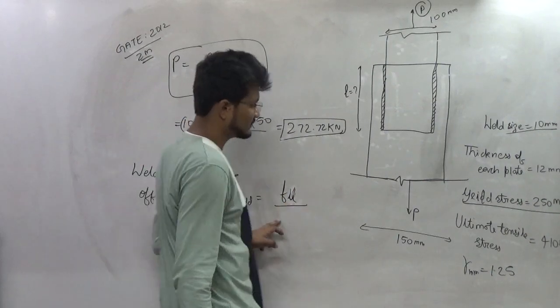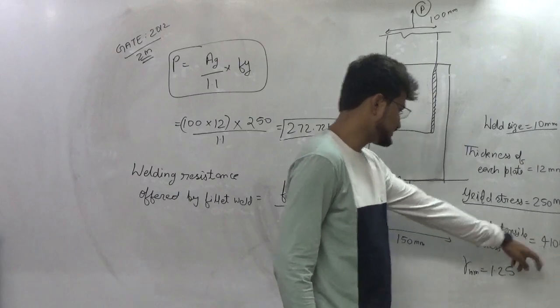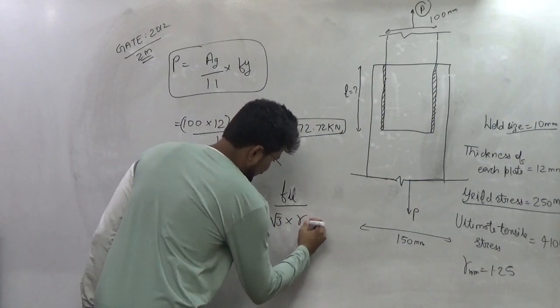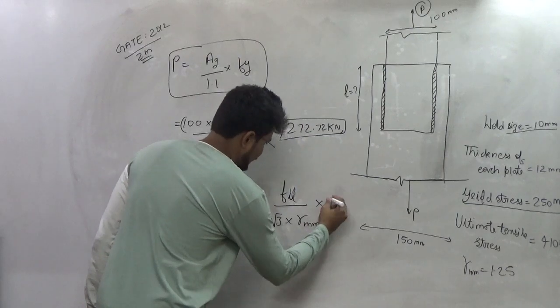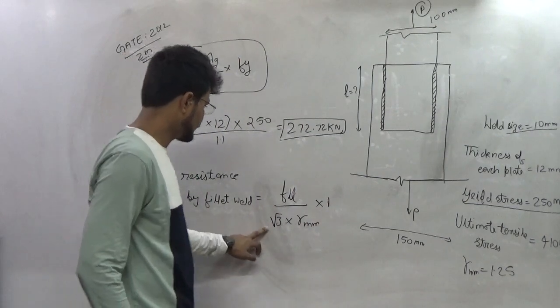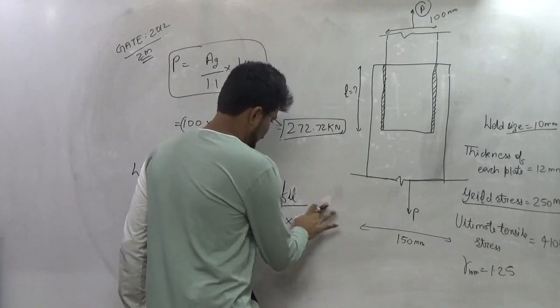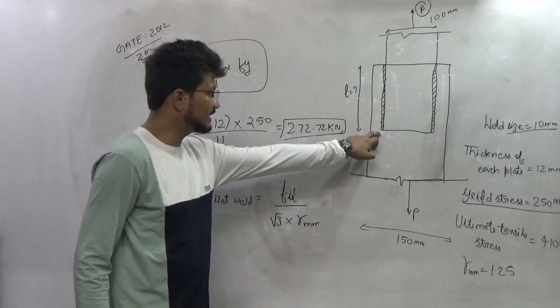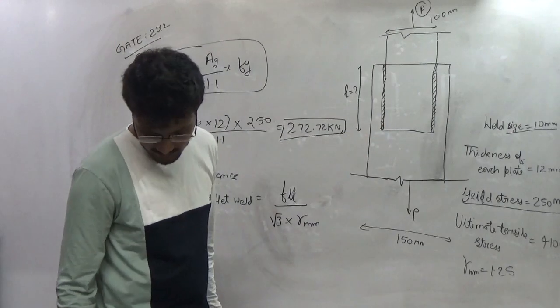Fu ultimate which is equal to ultimate tensile stress is 410 MPa, Fu by root 3 gamma mm into. This is the stress which will be developed in the fillet weld when we transmit the load.